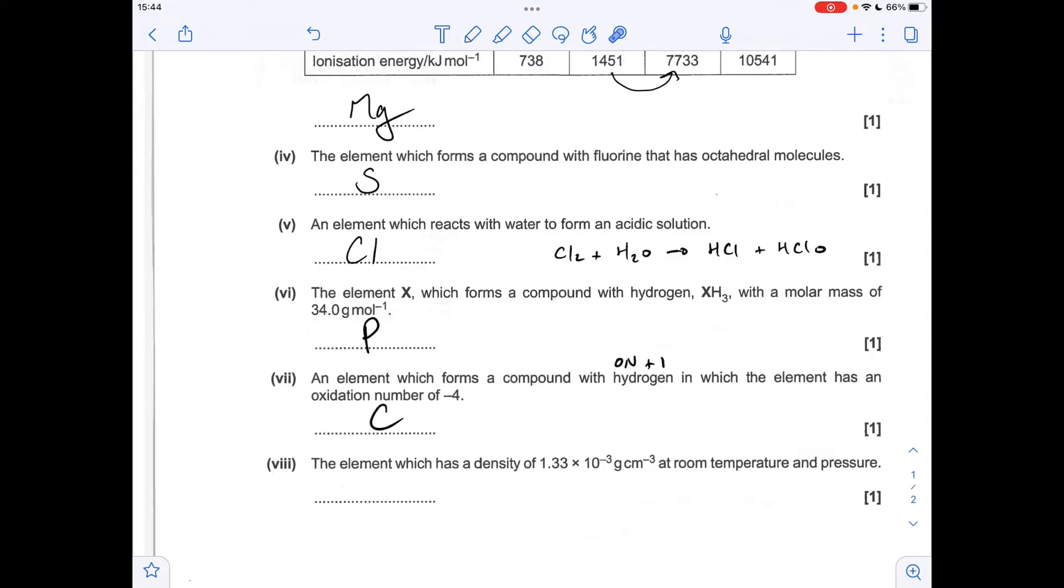And the final one, the element that has a density of that many grams per cubic centimetre at room temperature and pressure, so this is obviously hinting at the 24 dm cubed rule, or 24,000 cm cubed rule, so if we multiply this mass by 24,000, we're going to find the mass of a mole of the substance, so that's coming out at 31.92 grams, so we must be talking about elemental oxygen, and so oxygen, or O2, would be fine for the answer there.